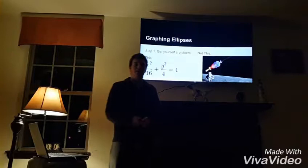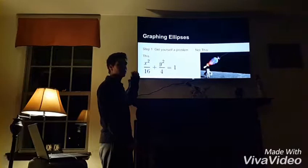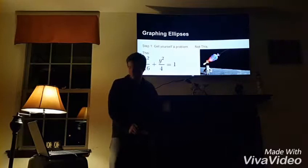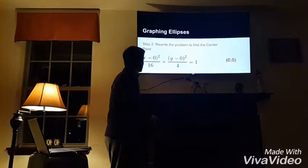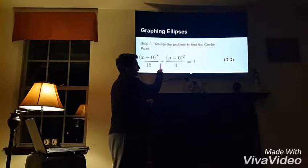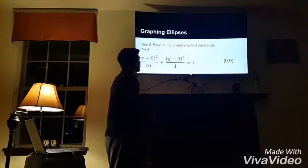First, we are going to focus on graphing ellipses. Step 1 is to get yourself an equation. We are going to be using x squared over 16 plus y squared over 4 equals 1. Step 2 is to rewrite the problem to find the center point. We are going to substitute x minus 0 for x and y minus 0 for y in the equation, so it will be x minus 0 squared and y minus 0 squared.